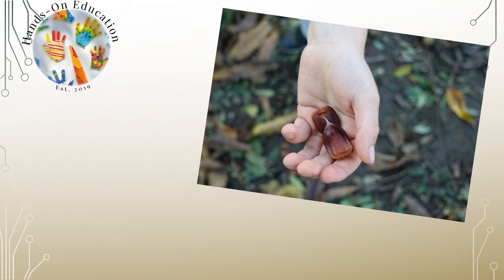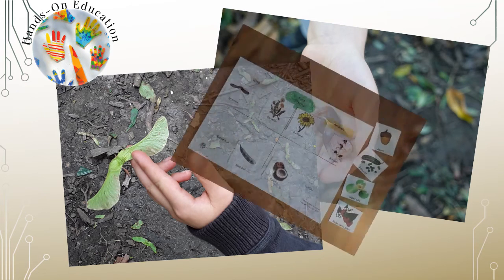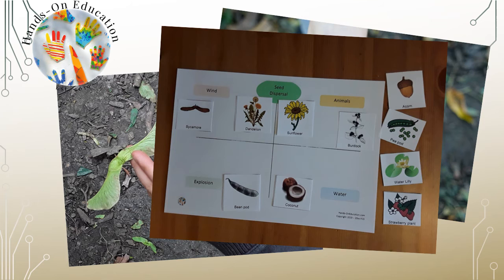For your hands-on activity, go on a nature walk and observe the seeds around you. Think about how different plants disperse their seeds. Look for clues like where you found the seed and how the seed is designed. Sort images of seeds into groups to show the different ways plants disperse their seeds.